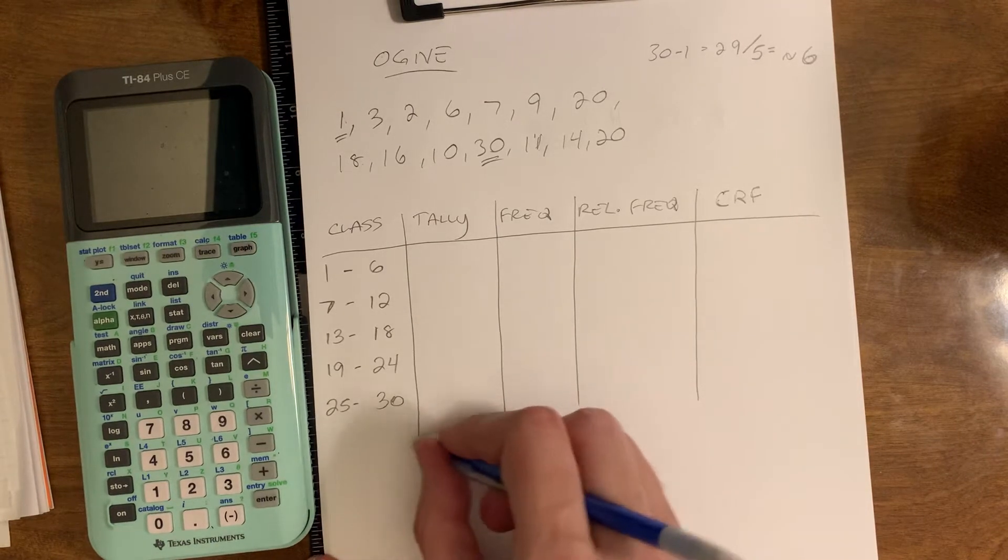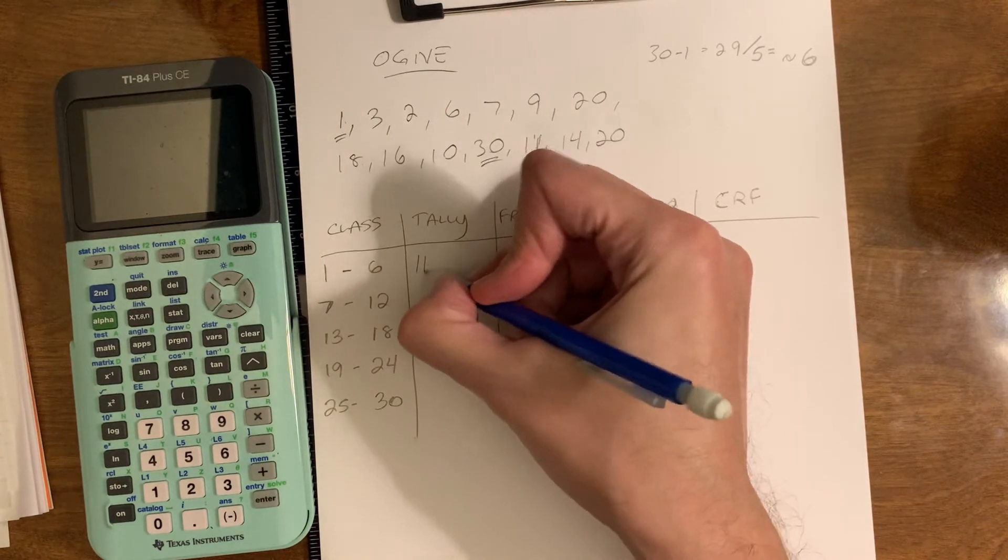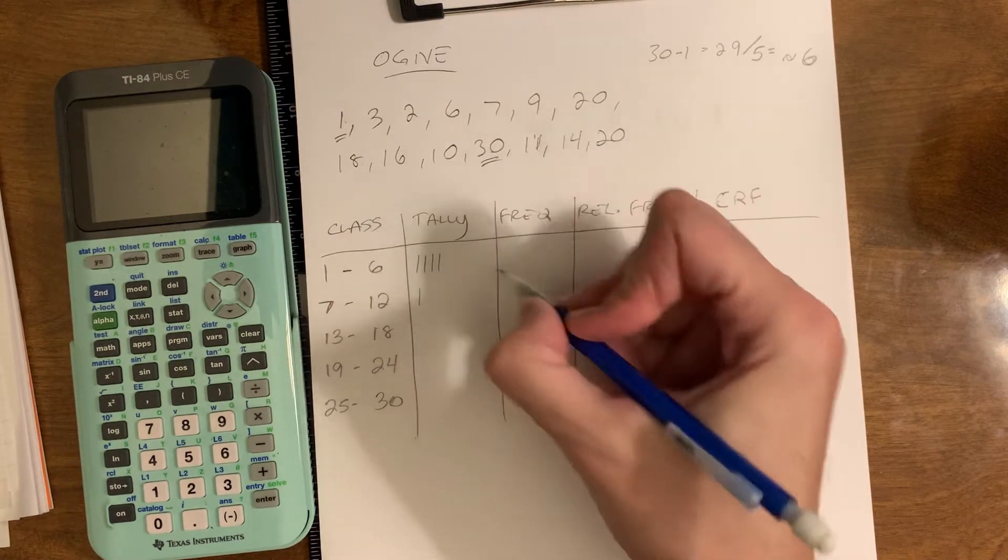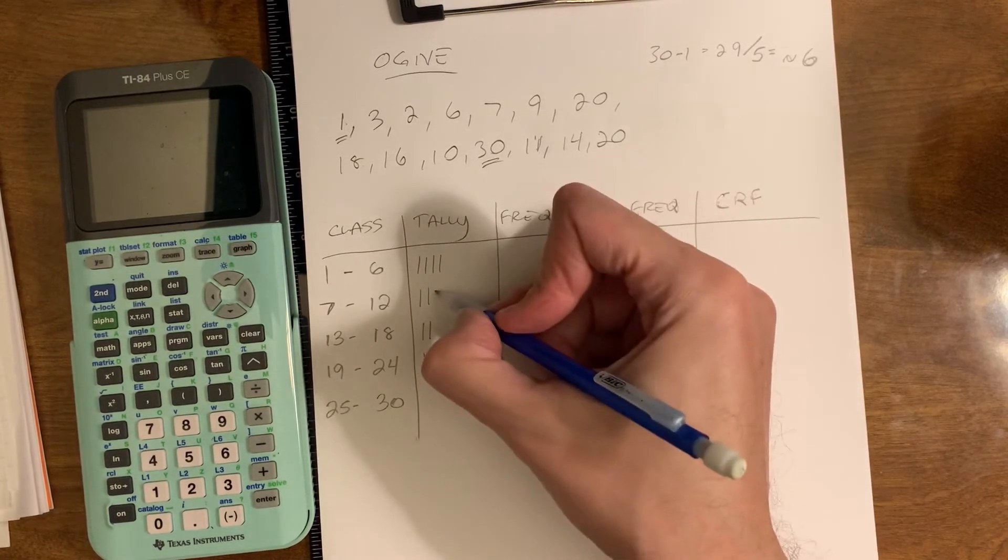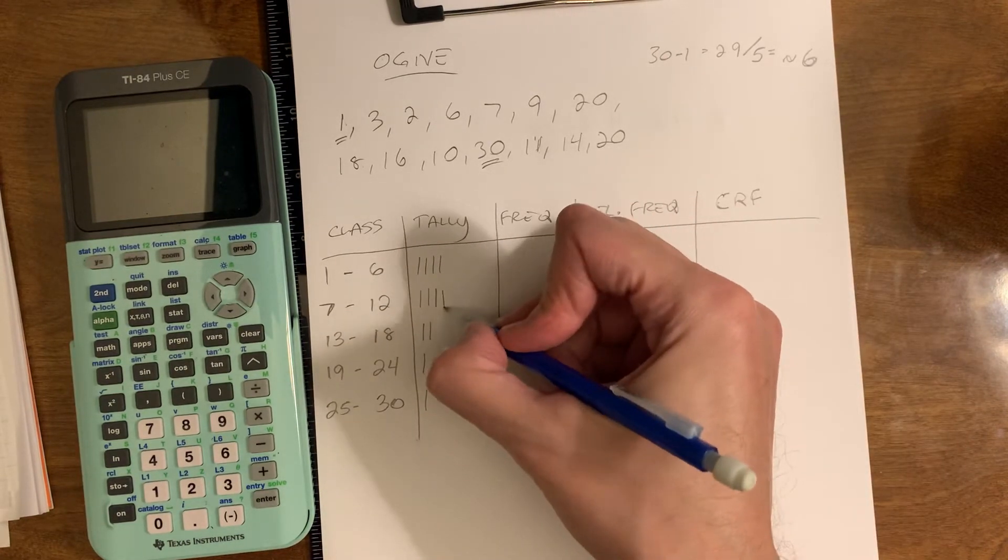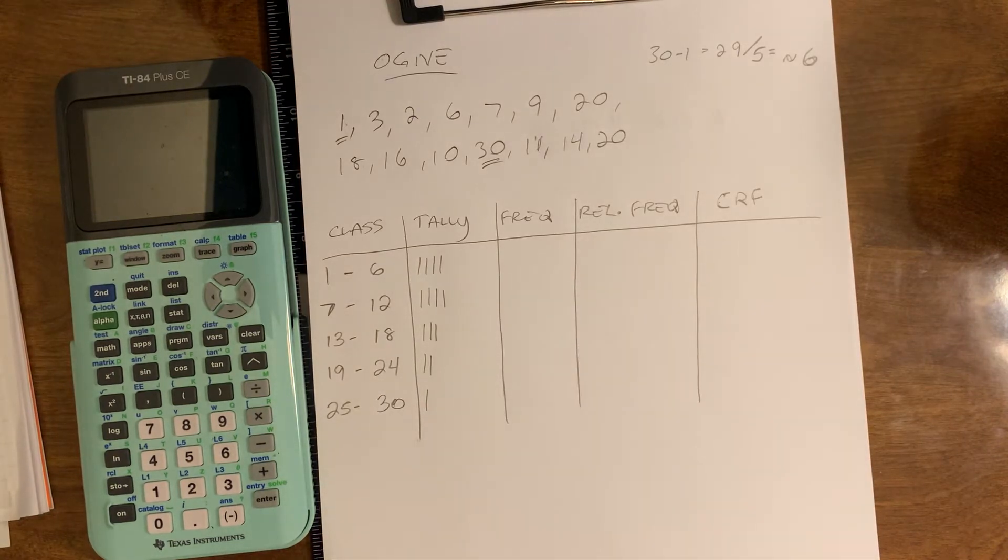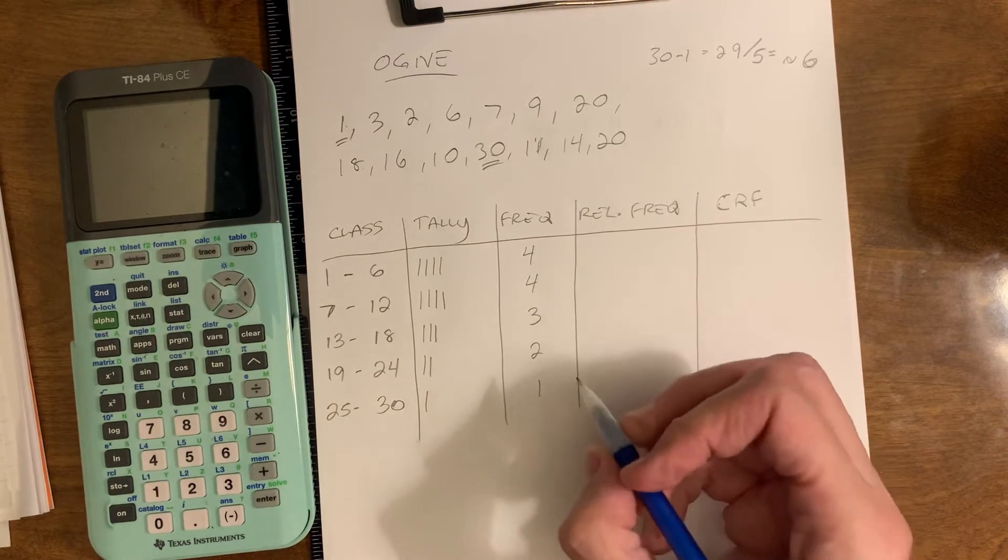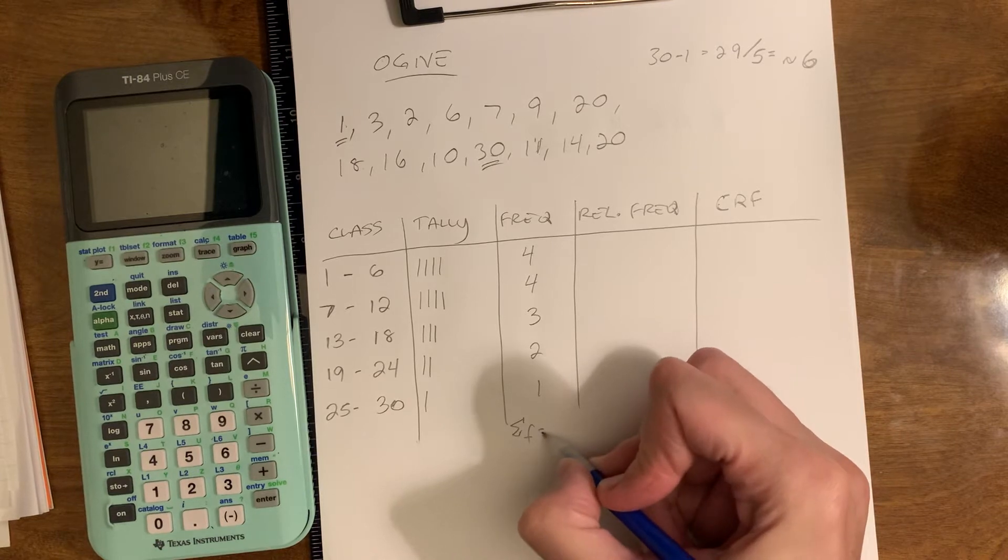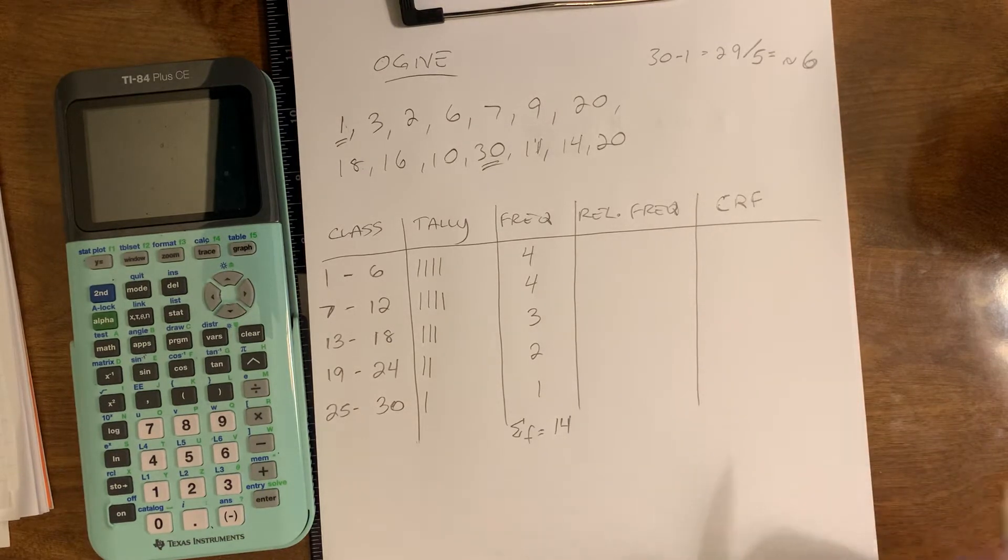Okay, now we're going to just do the tallies. So we're going to go through each data point and put the tick mark where it belongs. We've got 1 and 3 and 2, 6 and 7 and 9, 20, 18, 16, 10, 30, 11, 14, and 20. I have 4, 4, 3, 2, 1. Now we add together all those numbers, and hopefully we get 14. We got all the values that are in the data set, so we're good to go so far.